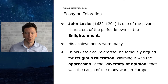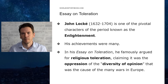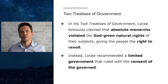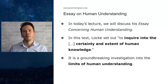In his essay on toleration, he famously argued for religious toleration, claiming it was the oppression of the diversity of opinion that was the cause of the many wars in Europe. In his Two Treatises of Government, Locke famously claimed that absolute monarchs violated the God-given natural right of their subjects, giving the people the right to revolt. Instead, Locke recommended a limited government that ruled with the consent of the governed, and this text would later become inspiration for the American Revolution.